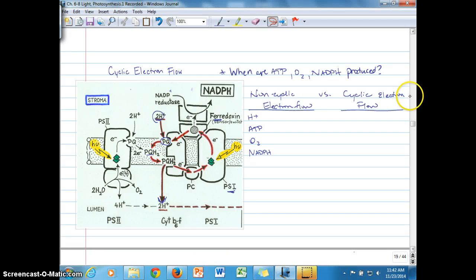We ended the last video looking at a couple ways that hydrogen ion concentration increases in the lumen, establishing a hydrogen ion gradient with high concentration in the lumen and low in the stroma. That's ultimately going to drive ATP synthesis. So it's valuable to compare what's happening between non-cyclic electron flow and cyclic electron flow.